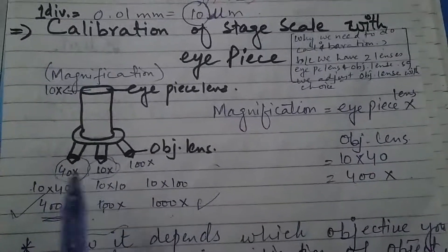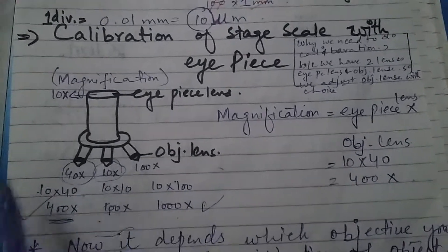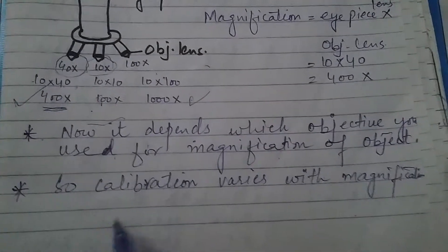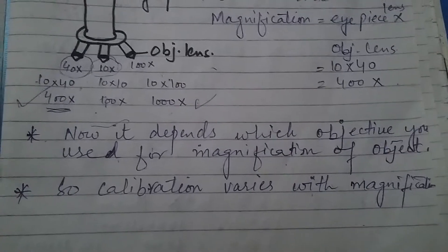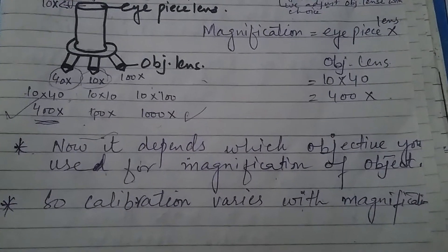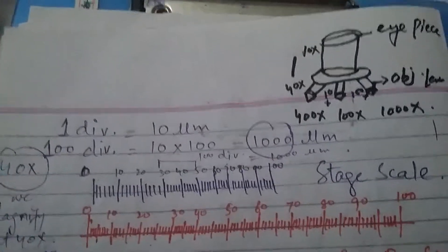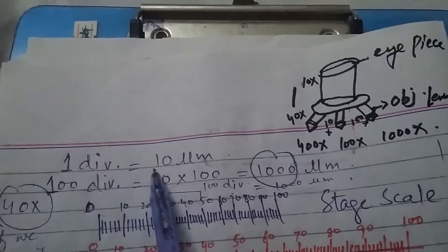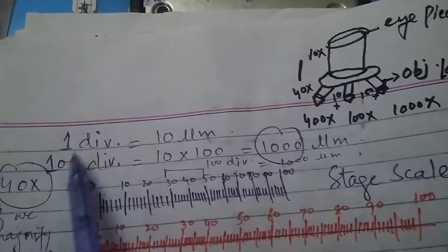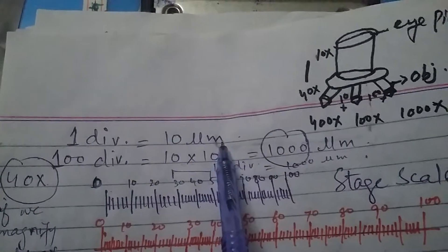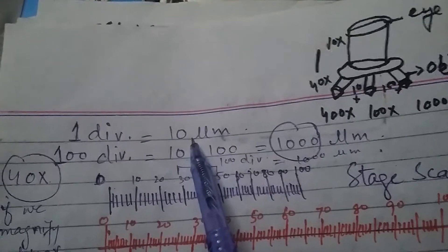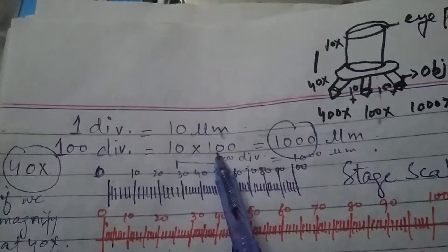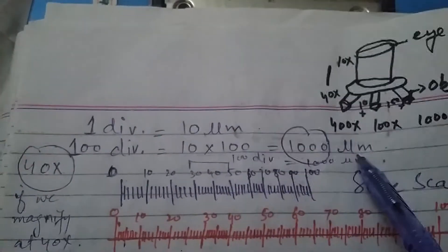Which objective lens we use determines the magnification, and calibration varies with the magnification. We established that one stage micrometer division equals 0.01 mm, which equals 10 micrometers. So 100 divisions on the stage scale equals 10 × 100 = 1000 micrometers. Therefore, 100 divisions equals 1000 micrometers.